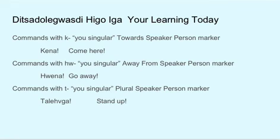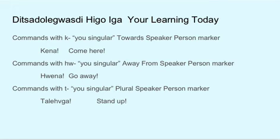Kena — You come towards me, the speaker. Commands with hu-hu singular, away-from-speaker person marker. Huna — Go away. Commands with t-u singular, plural speaker person marker. Kalehga — Stand up. It's a command to one person, but the t-t sound expresses multiple activities of rising.